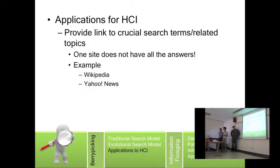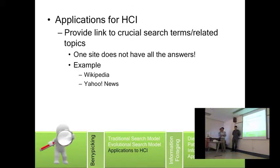So what is the application for HCI? As you all know, you will often find information from the internet through Wikipedia. Below the Wikipedia article, you will find related topics to the information you searched for. Information seeking is like a puzzle or a maze — one site does not give you all the answers, so you need to search a variety of sources to find them all.